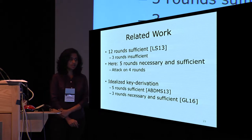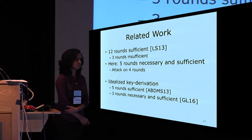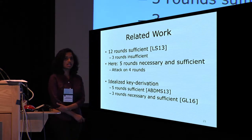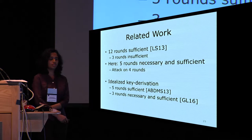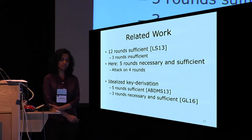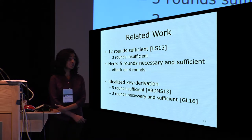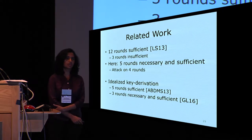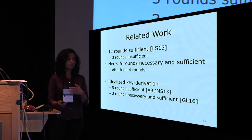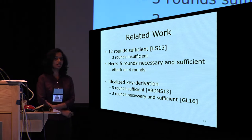Before presenting the five-round proof, let me mention prior work. It is known that 12 rounds of the IEM construction with trivial key schedule suffice to build an ideal cipher — shown by Lampe and Seurin — and they also showed three rounds are insufficient. In this work, we show that five rounds are necessary and sufficient: we give a five-round indifferentiability proof and an attack on the four-round construction.